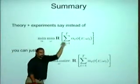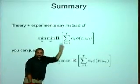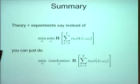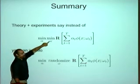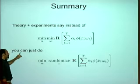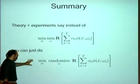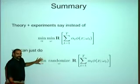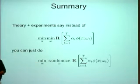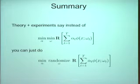Here's the lesson from this part of the talk. Typically people fit nonlinear decision boundaries by running a minimization over both the weights and the parameters. The caricature of what we've done is: minimize over the weights, but randomize over the parameters — and prove that you get very similar results.